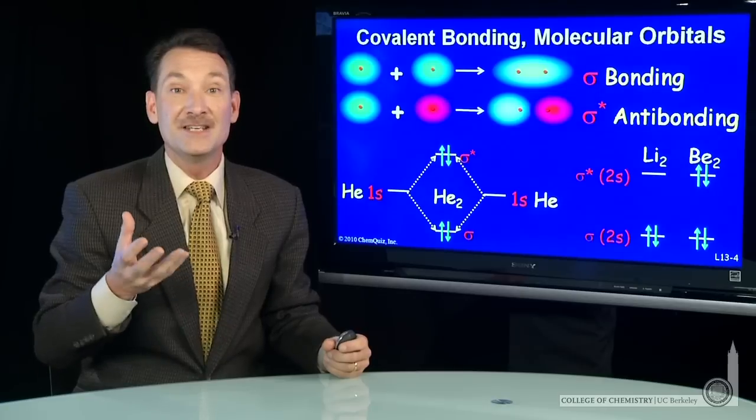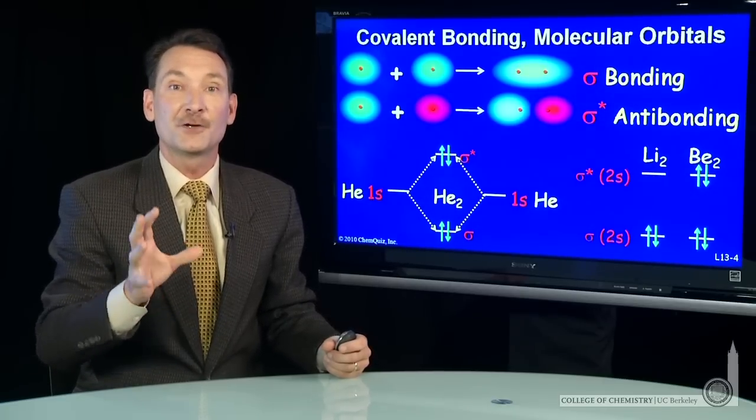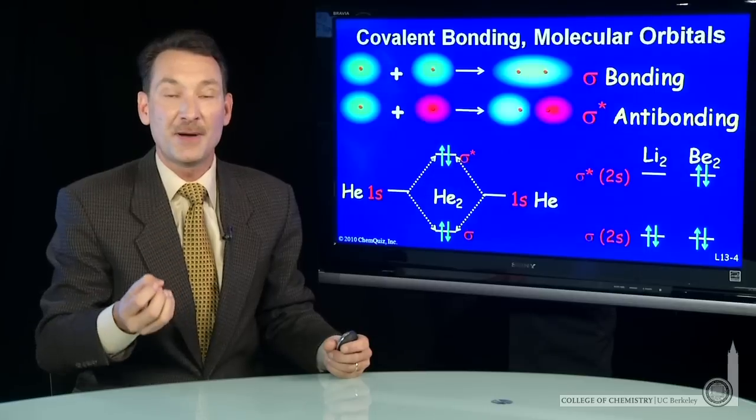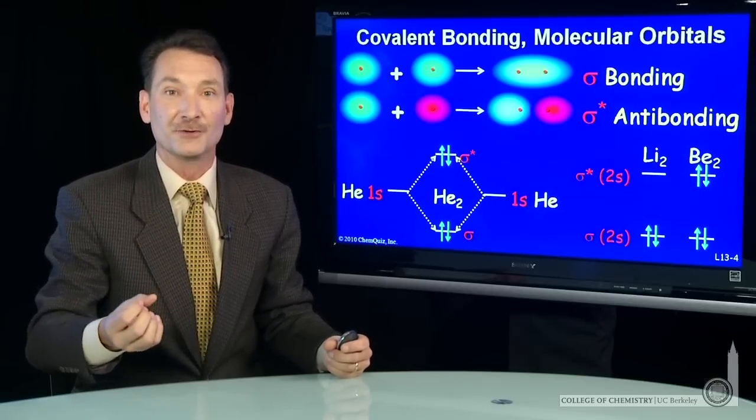So Be2, the beryllium 2 molecule, doesn't form. My molecular orbital theory has predictive power and it can predict the bond order and whether or not bonds form in molecules.